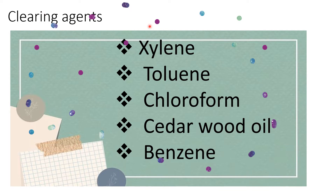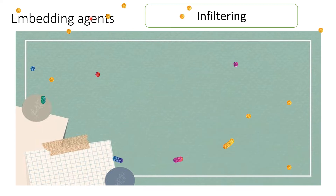Before embedding, we focus on the infiltration process. The tissue passes through the steps of fixation, dehydration, clearing, and then infiltration. Infiltration means the paraffin wax enters into the inner sides of the tissue.